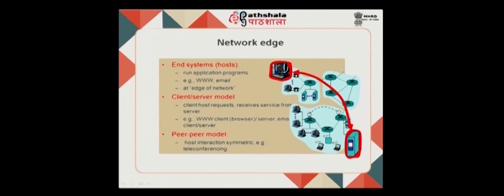Two end systems at the network edge can communicate in different models. In the client-server model, a client host requests and receives a service from the server. The worldwide web is a clear example — a web browser (the client) on one end communicates with a web server on the other using the network. Email is another example, where an email client accesses data from an email server.